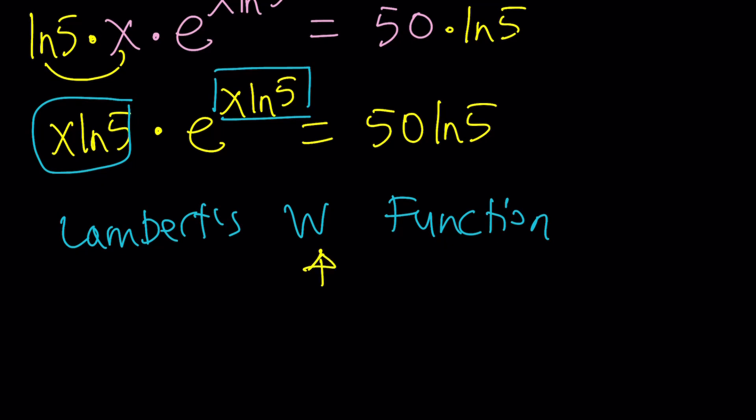So Lambert's W function is basically, can be expressed with a big, huge W. W, and then if we input T e to the T, output is supposed to be T. In other words, it's the inverse of T e to the T as a function of T. So we don't really have an explicit expression for it, unfortunately, but it's also called the product log.